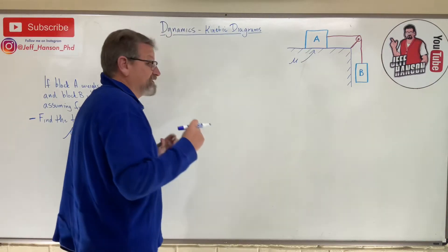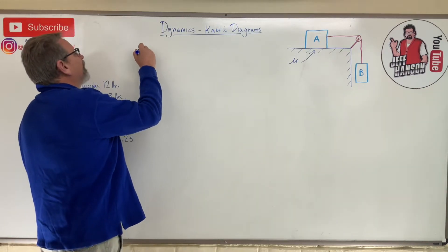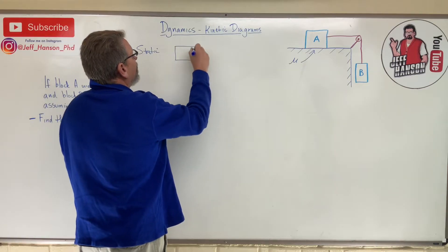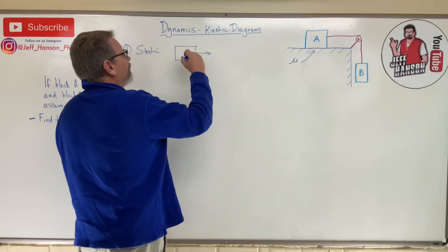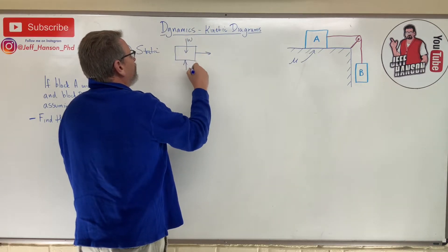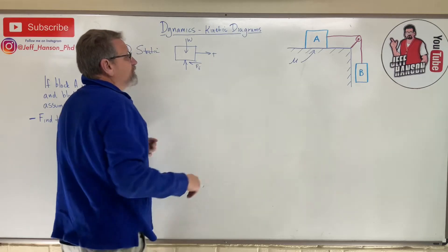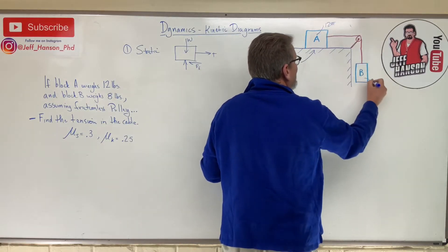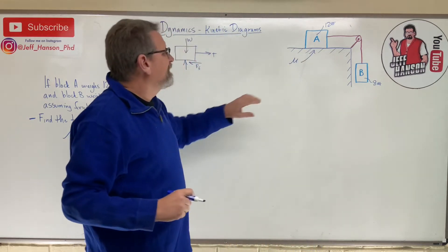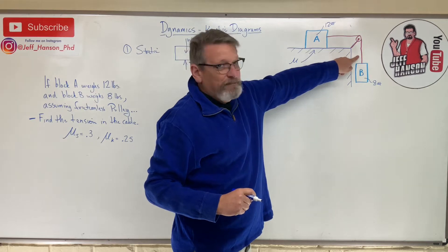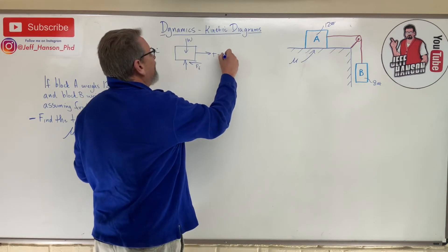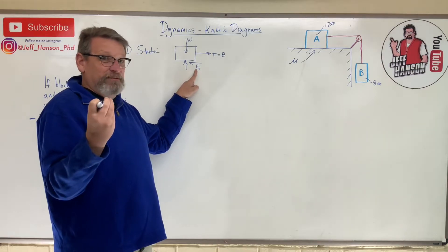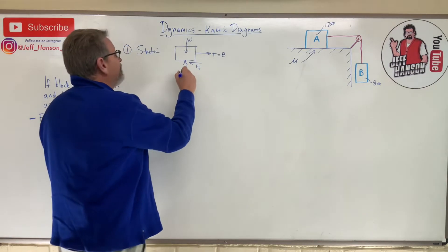Step one: let's check if it's static or dynamic. For the static case, looking at block A — it has a weight, a normal force, and a friction force. If block B is 8 pounds, then the tension T is 8 pounds. For the system not to be moving, the maximum friction force has to be above 8 pounds.